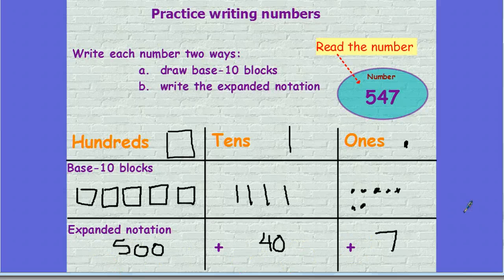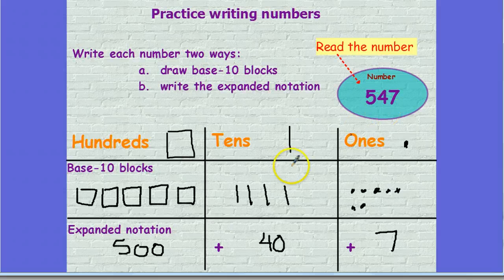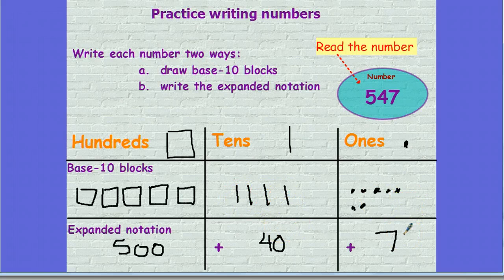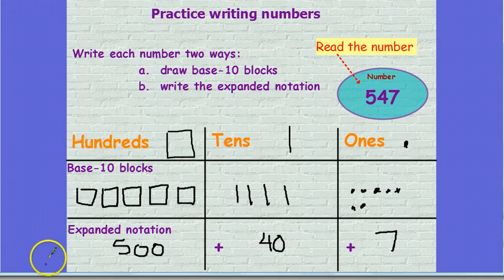Alright, let's see how you did. So in 547, I have five hundreds — so I draw those five hundreds. Looking at the tens, I have four tens, so I draw those four tens. And I have seven ones, so I draw those seven ones. I count them: 100, 200, 300, 400, 500. The tens are 10, 20, 30, 40. And I have seven ones. So expanded notation is 500 plus 40 plus 7. Make sure you include those plus signs when you write expanded notation.